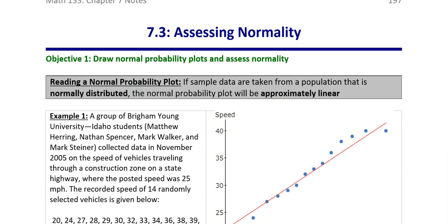When you're looking at a normal probability plot, what you want to determine is whether or not the dots are approximately linear or not. They're going to be following a diagonal line path. If the dots, if the points, follow that diagonal line path, then the dataset was approximately normal.